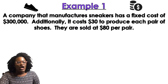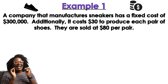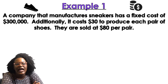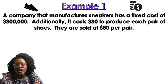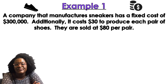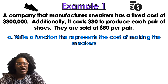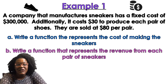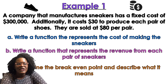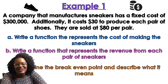Example number one. A company that manufactures sneakers has a fixed cost of $300,000. Additionally, it costs $30 to produce each pair of shoes. They are sold at $80 a pair. Part A: write a function that represents the cost of making the sneakers. Part B: write a function that represents the revenue from each pair of sneakers. Part C: determine the break-even point and describe what it means.